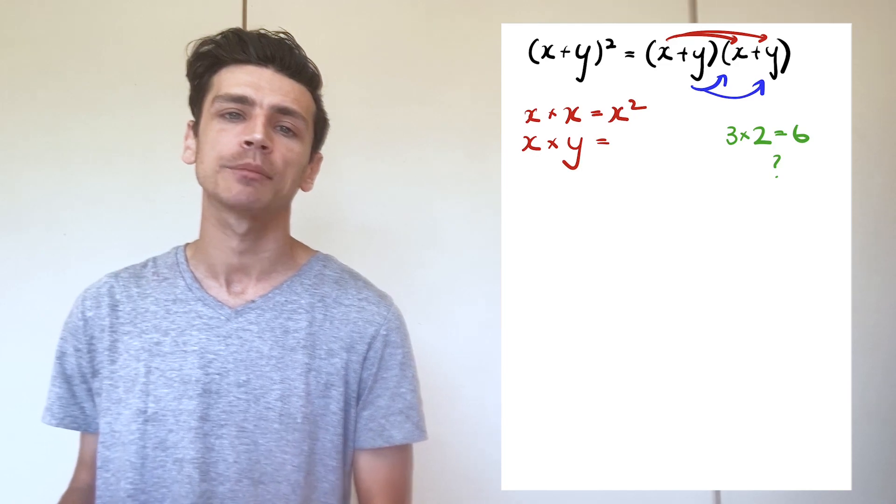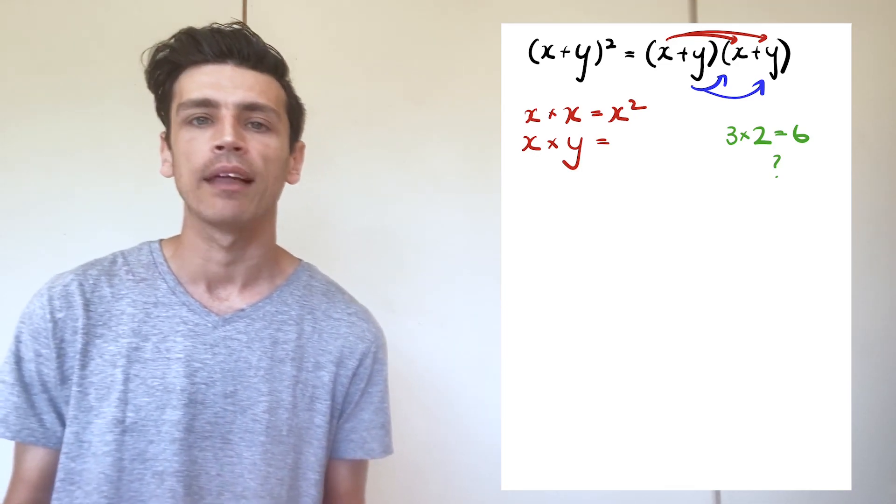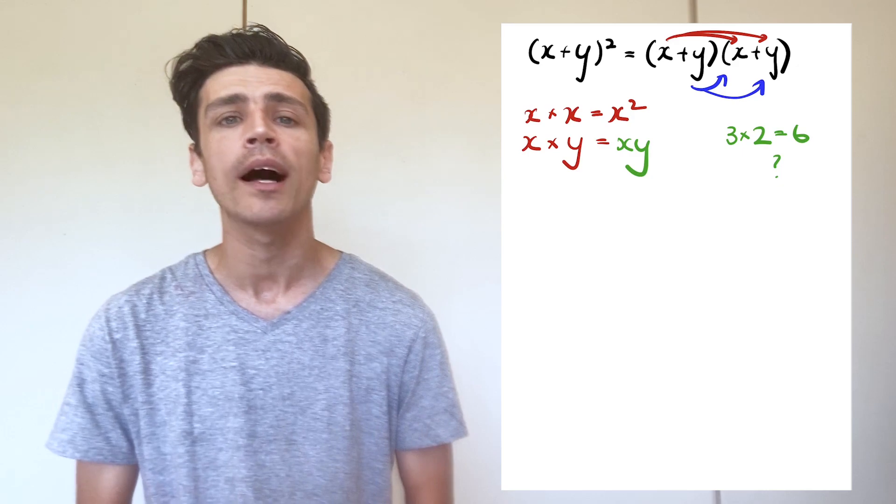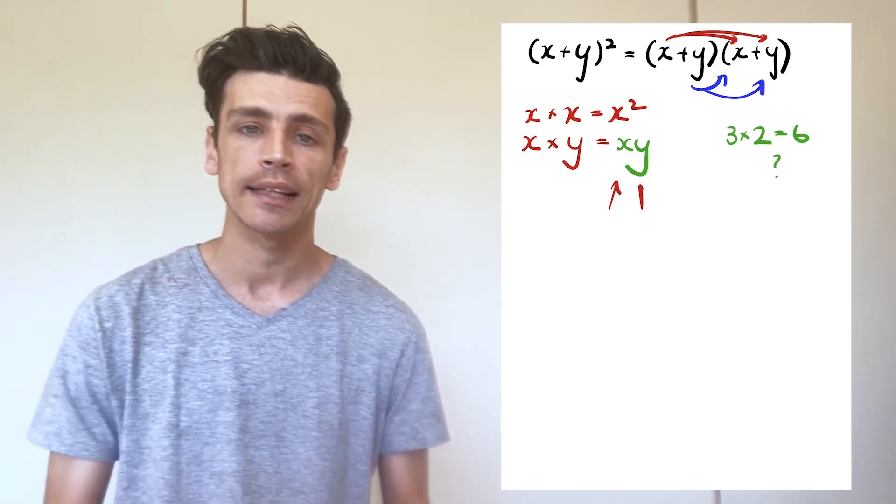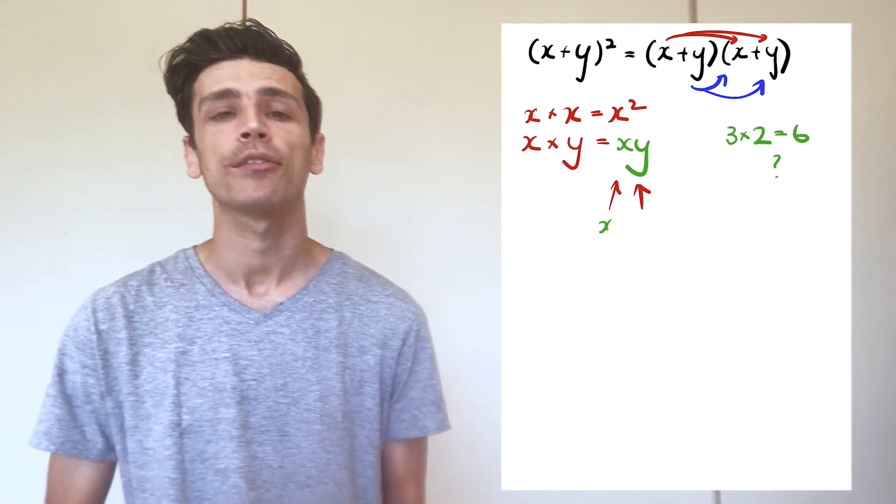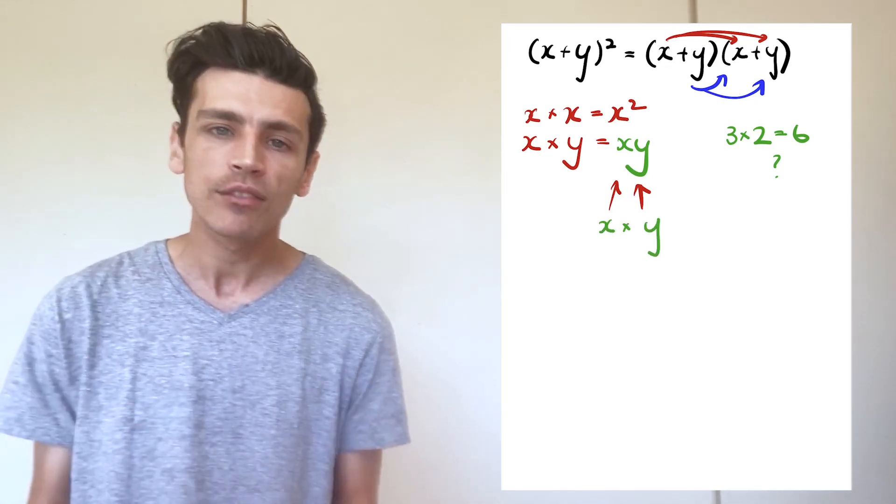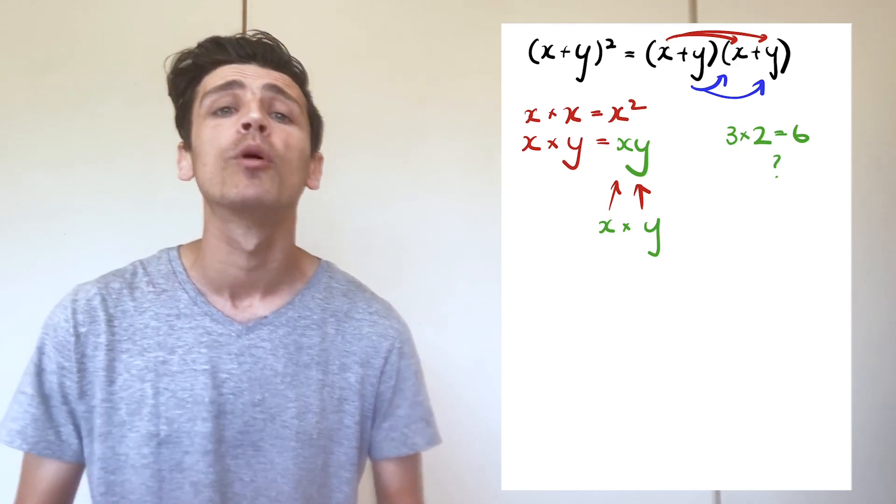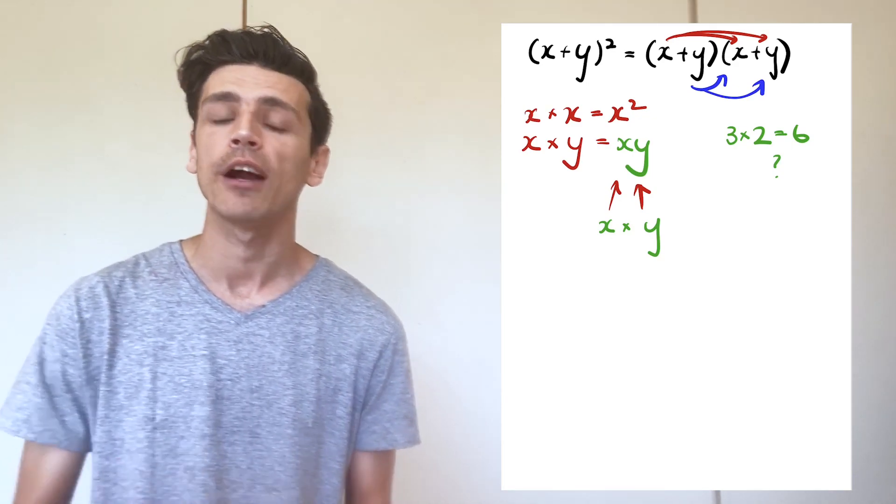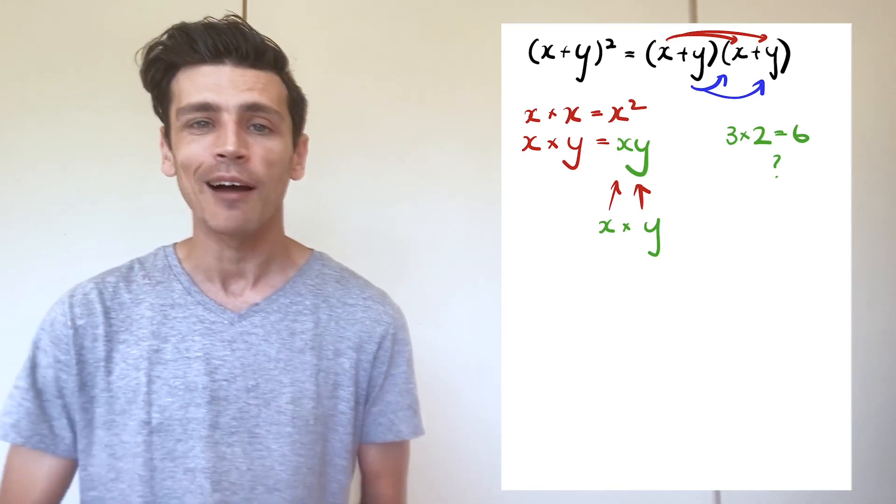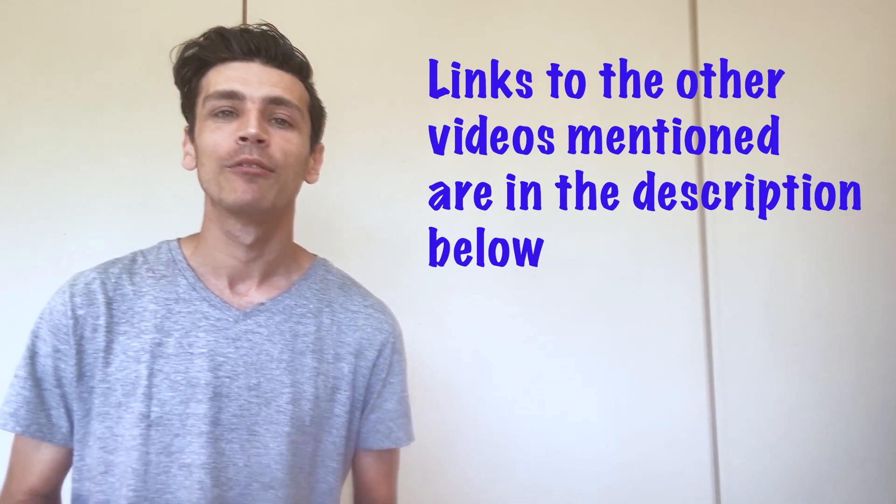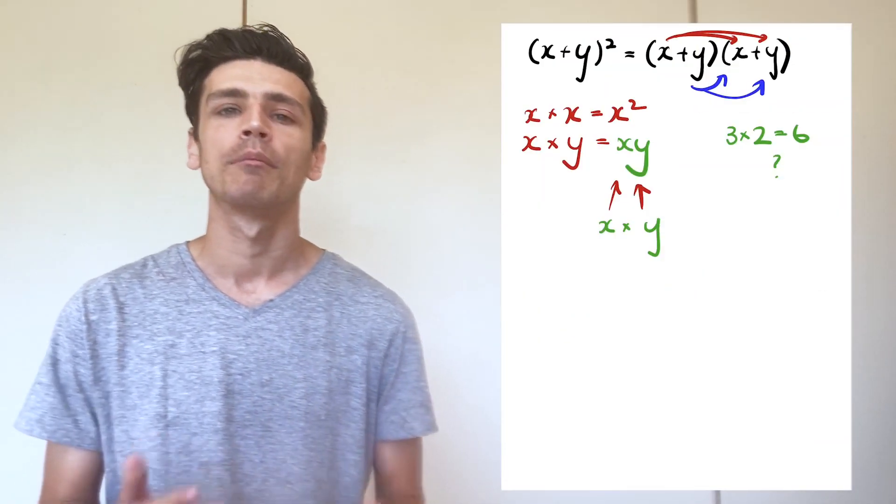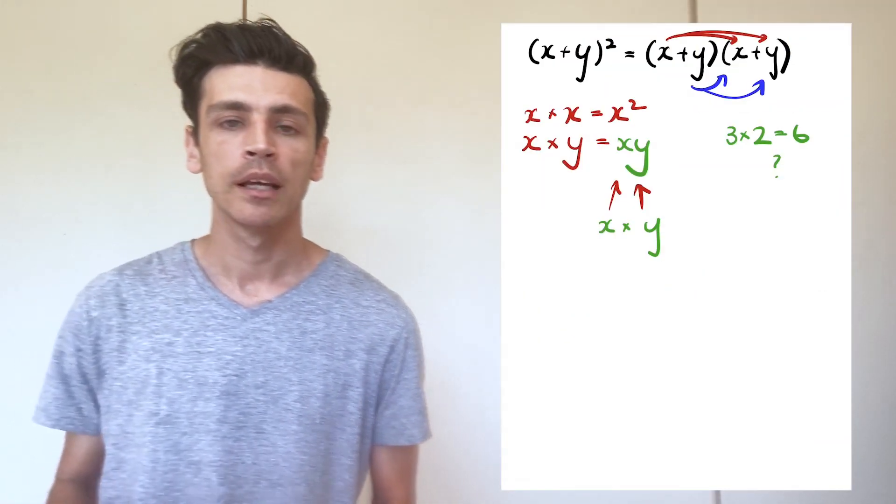So when we have this in algebra we multiply it like we did with normal numbers or with x multiplied by x. We go x multiplied by y, and how we write this is xy. This lets us know that we've got two variables, x and y, and they're multiplying each other. Later on, if we were given more information and we know what these variables actually represent, we can substitute those in.